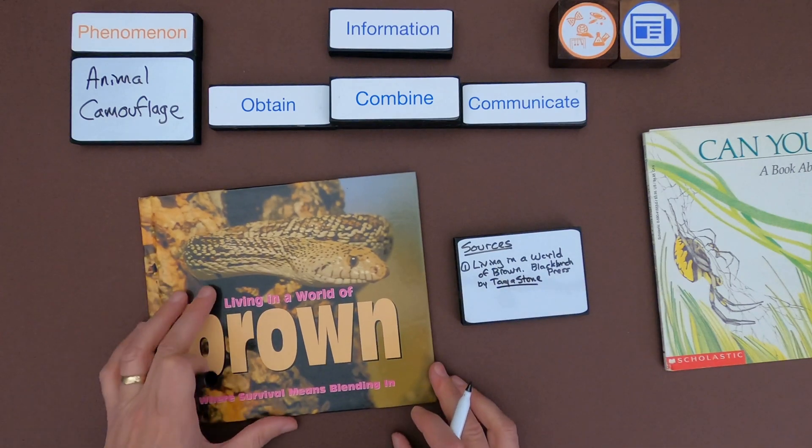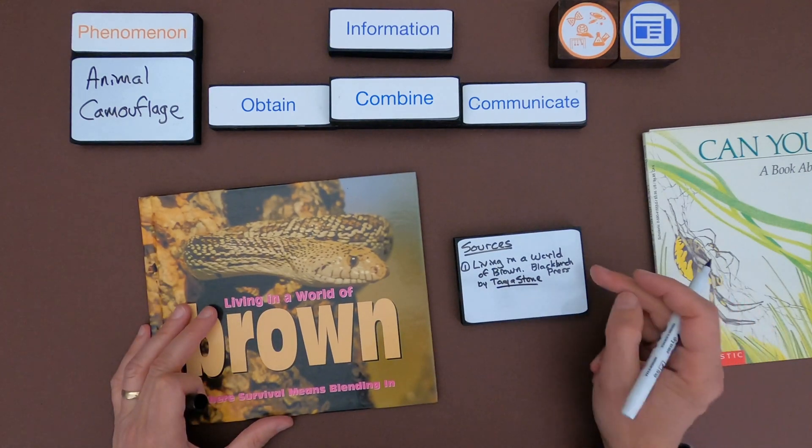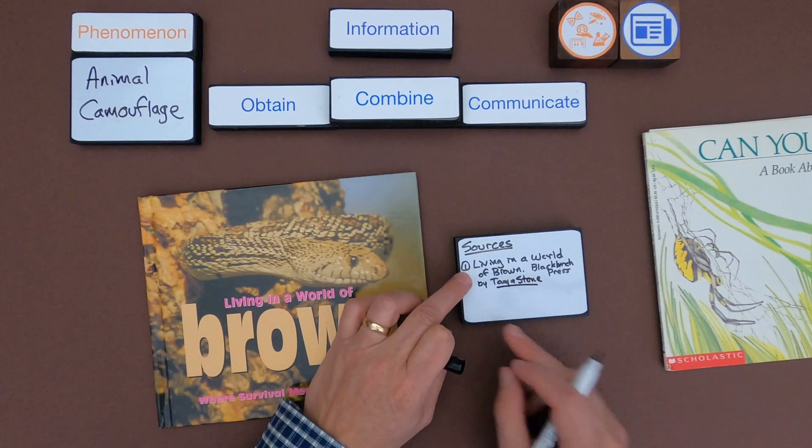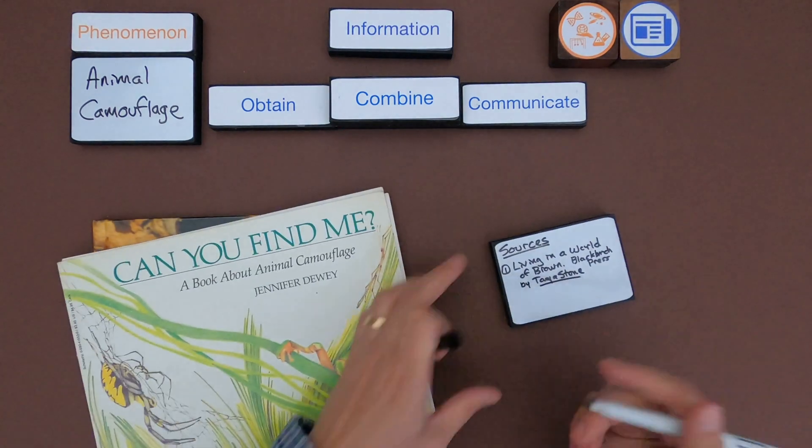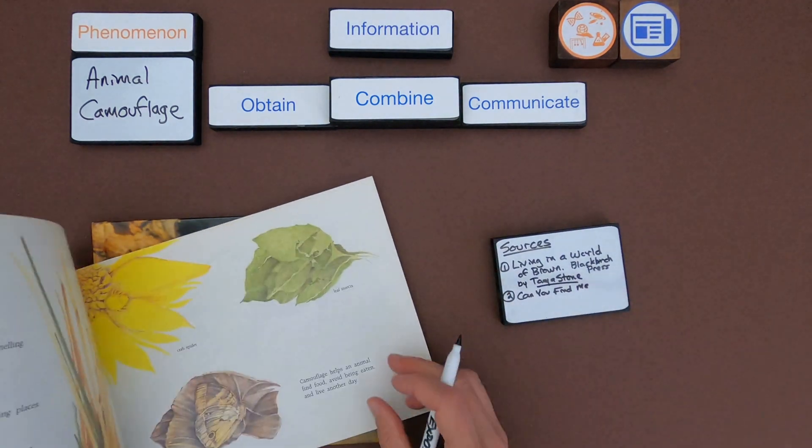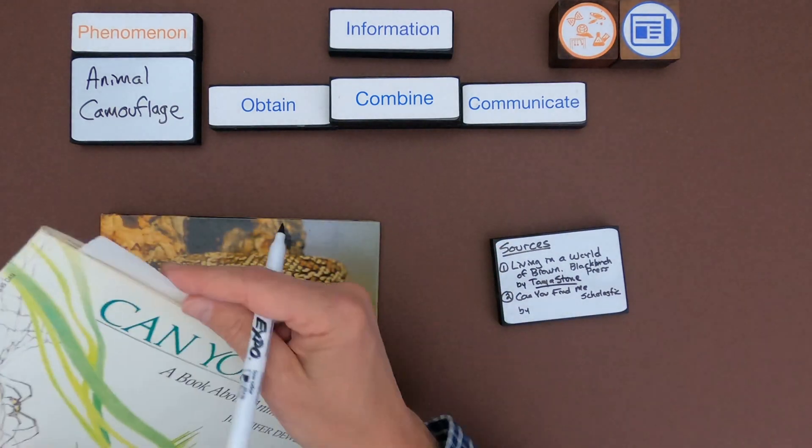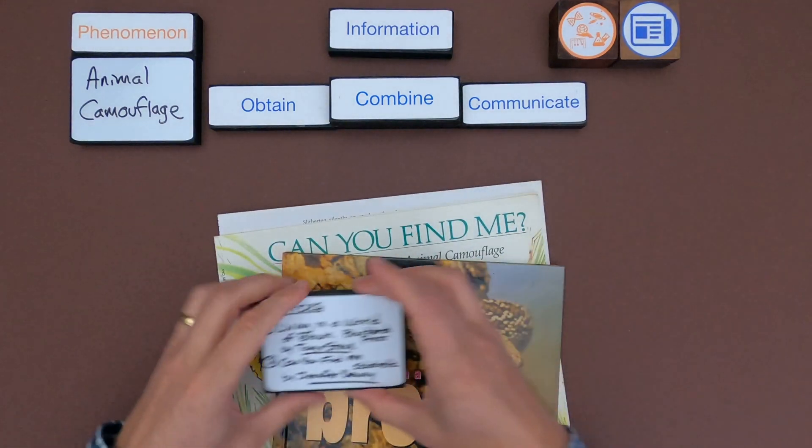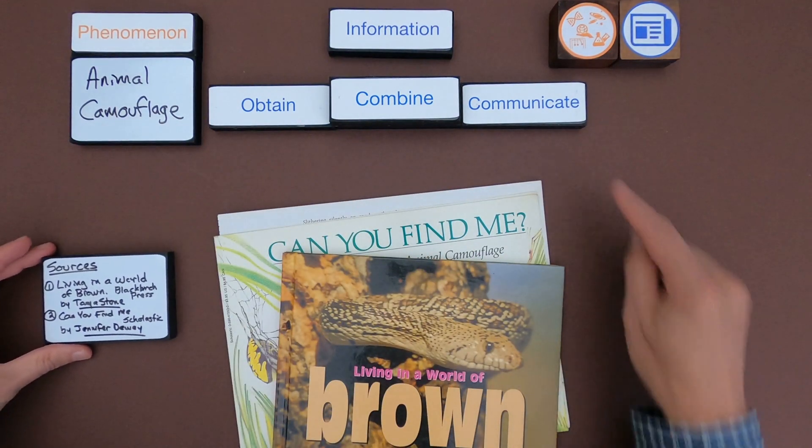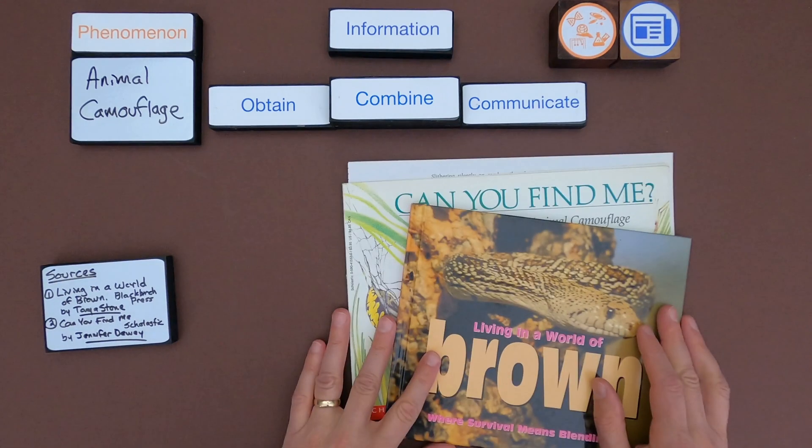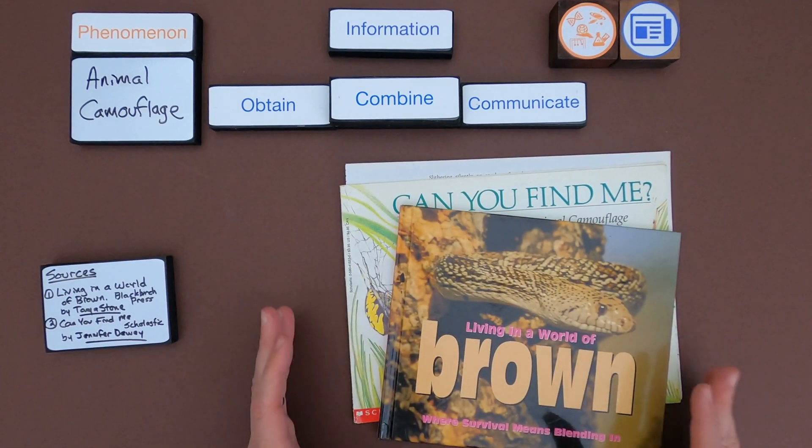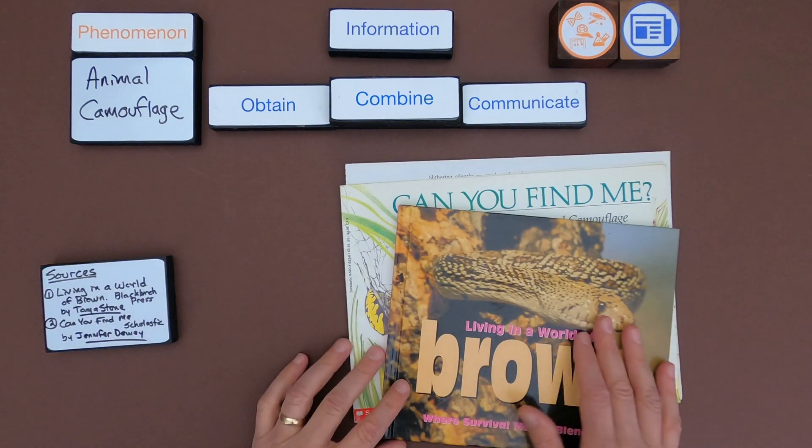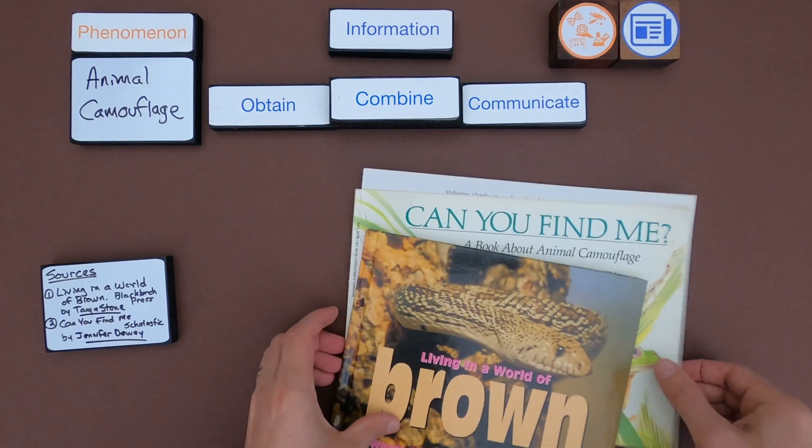Okay so the first one, and you can always find this on the inside, Living in a Brown World by Black Birch Press. And this is by Tanya Stone. And I'm going to just refer to that as source 1. And then let me write down the other source. Okay so these are the two sources. I'm going to leave these over here. That will be important when I'm starting to communicate information at the end. And then the next thing I want to do is I want to just go through and pull information. I always like to pull information that I think is interesting that I don't know about animal camouflage. So let me start with this and I'll just record some little bits of information.